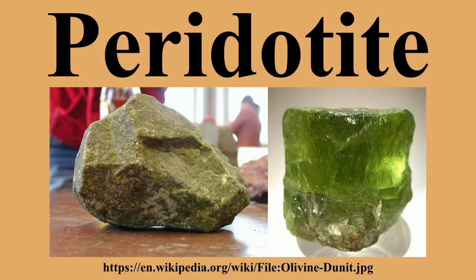Types of peridotite: Dunite — more than 90% olivine, typically with Mg/Fay ratio of about 9 to 1. Wehrlite — mostly composed of olivine plus clinopyroxene. Harzburgite — mostly composed of olivine plus orthopyroxene, with relatively low proportions of basaltic ingredients. Lherzolite — most common form of peridotite, mostly composed of olivine, orthopyroxene, and clinopyroxene, with relatively high proportions of basaltic ingredients. Partial fusion of lherzolite and extraction of the melt fraction can leave a solid residue of harzburgite.